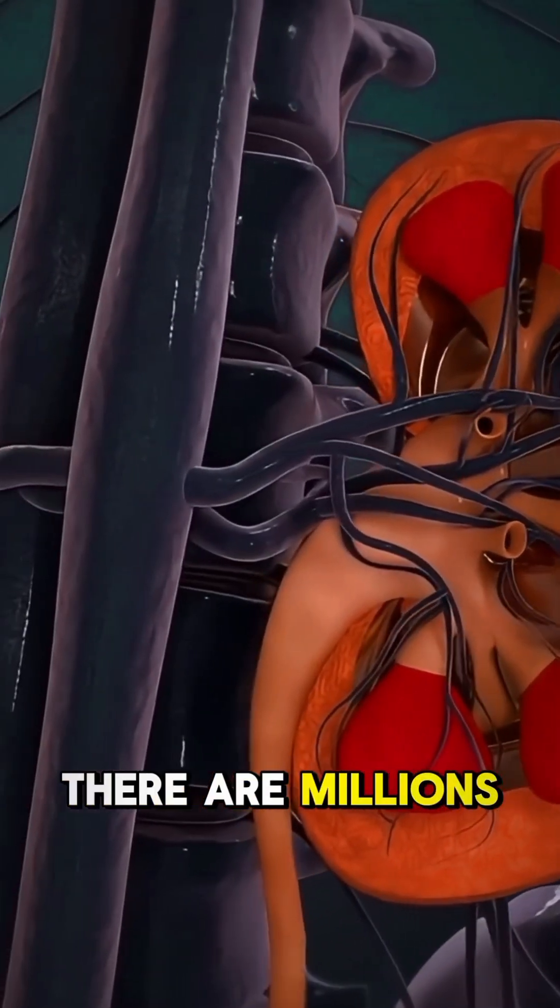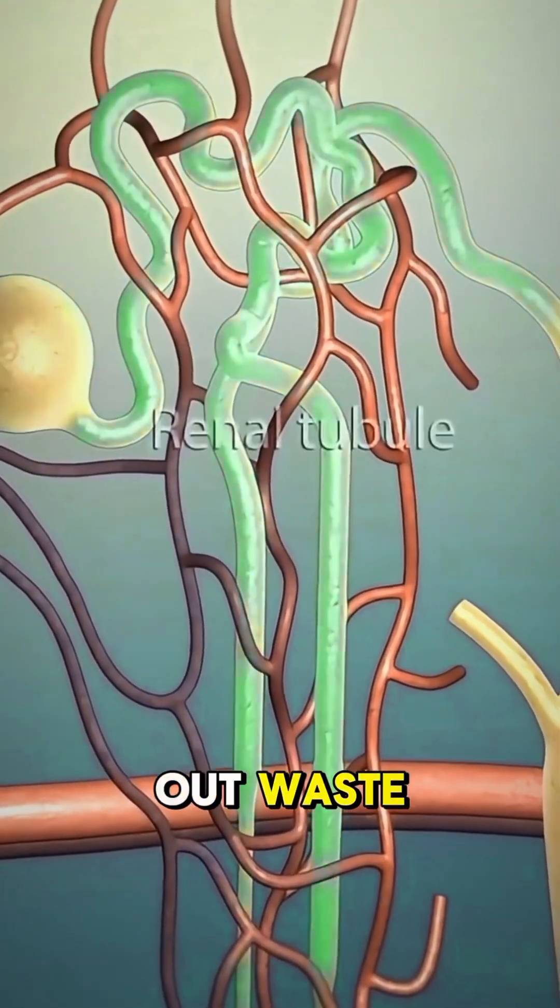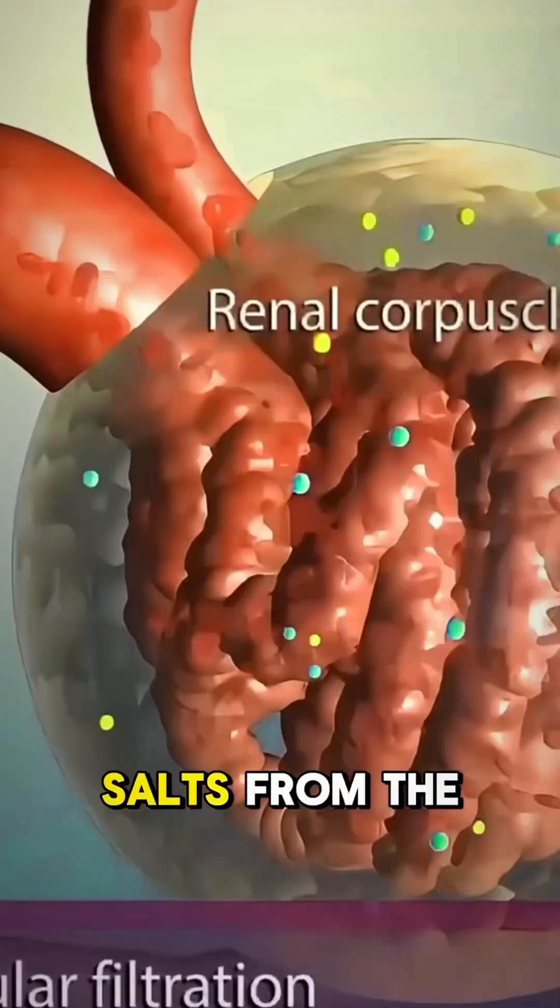Inside your kidneys, there are millions of tiny filters called nephrons. These nephrons filter out waste, excess water, and salts from the blood.